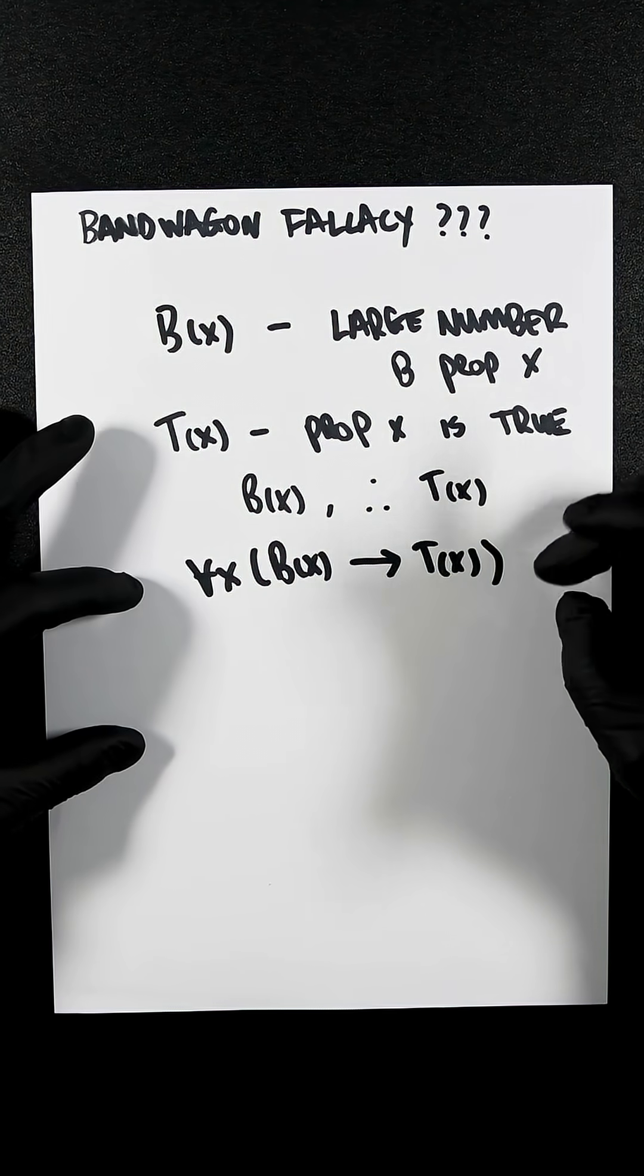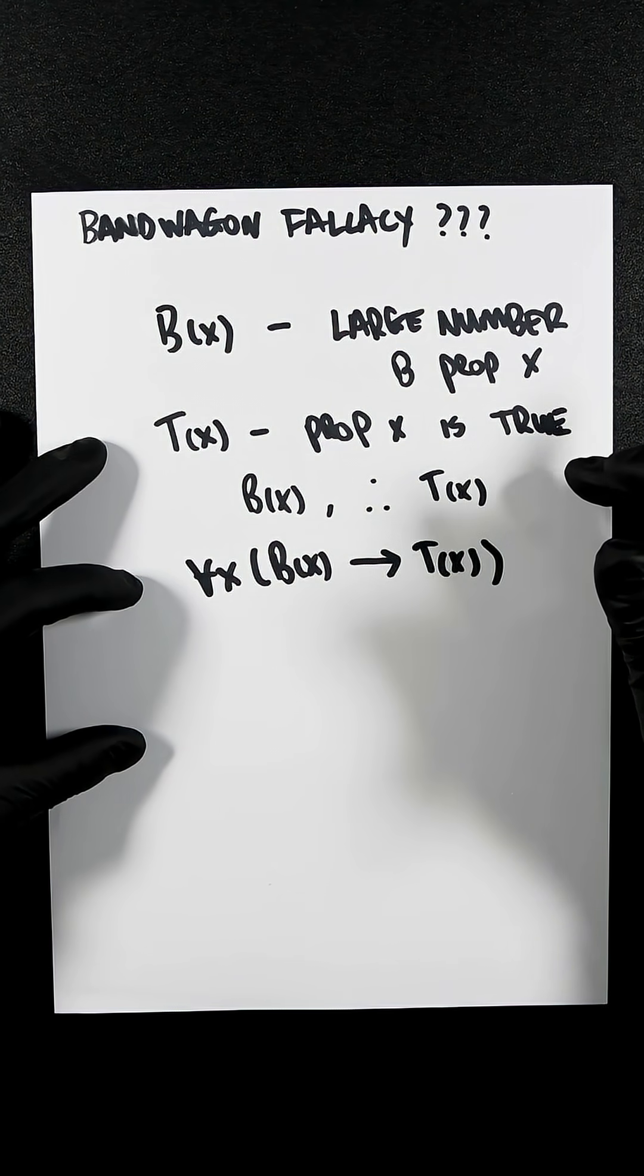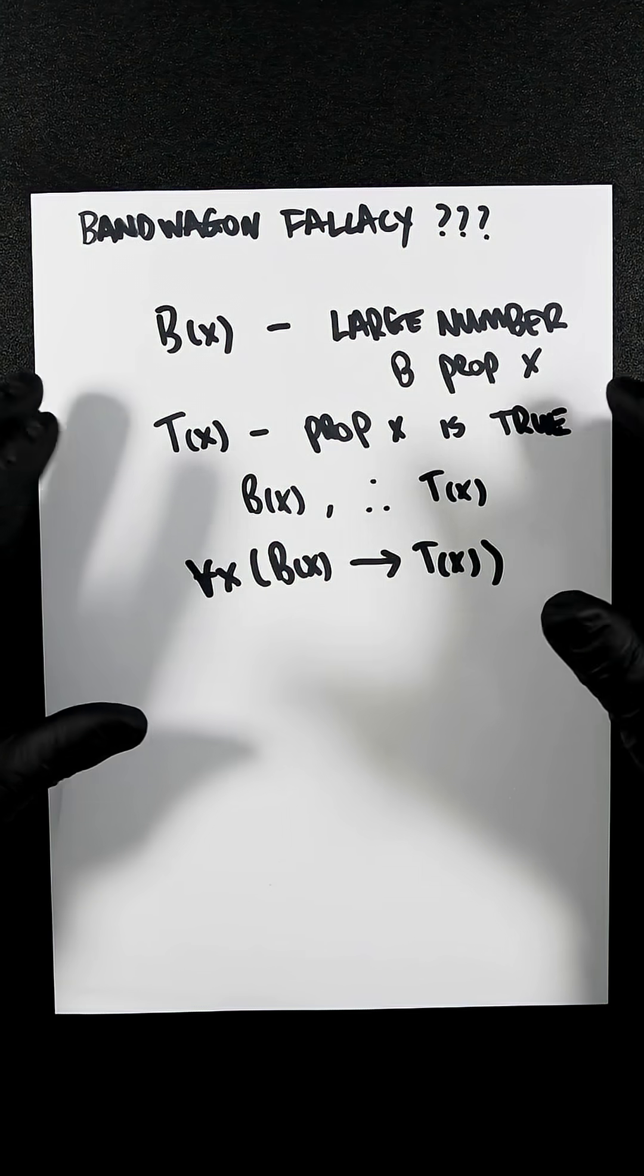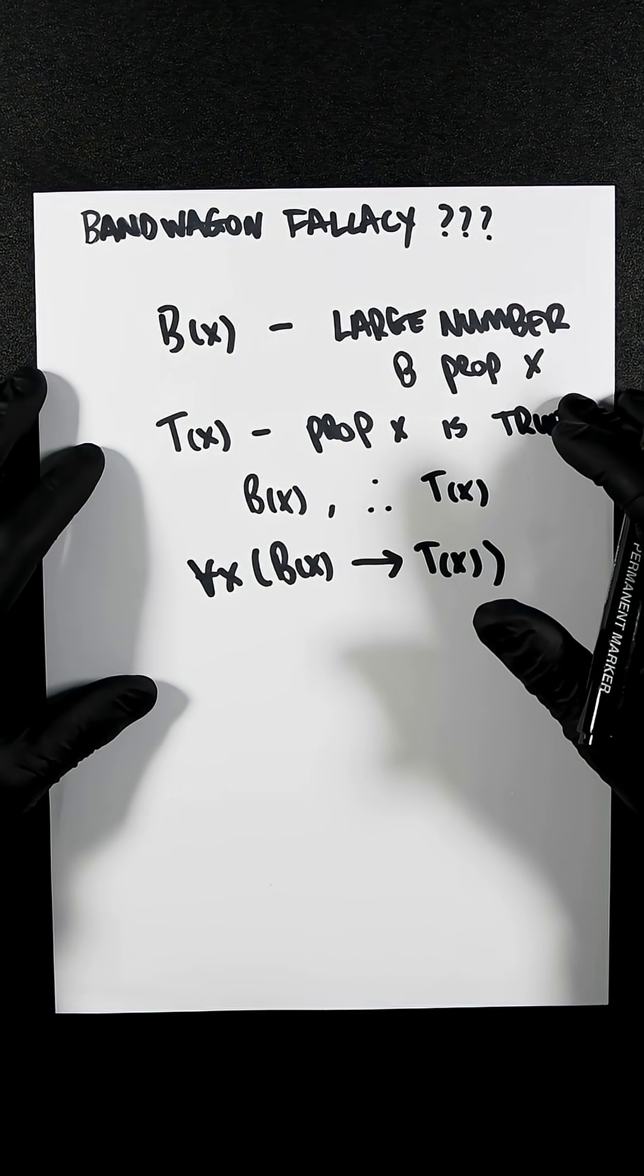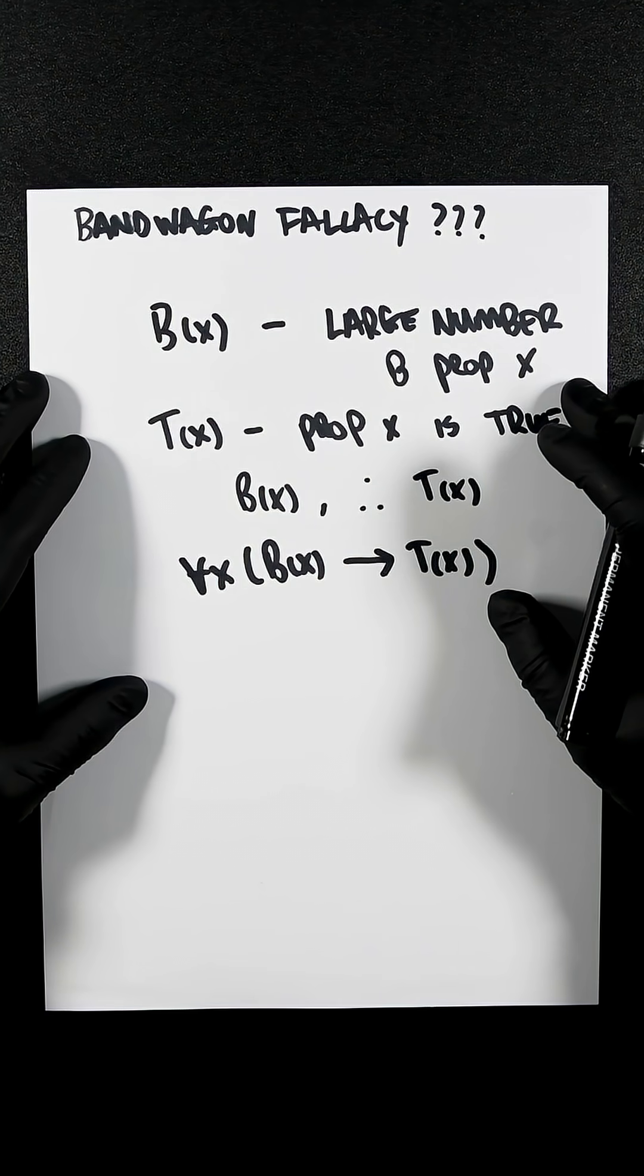The truth value of X depends on evidence or valid reasoning, not popularity. For example, most people believe that some sugar is harmless, so it must be fine. That is invalid reasoning, so it cannot be true.